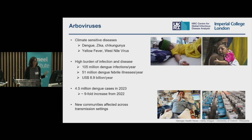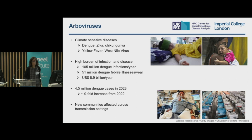In Nepal, where dengue was introduced in 2009, dengue is now spreading into the mountain regions. And in Europe, I'm sure you have heard that over the summer, hundreds of cases have been locally acquired in Italy, France and Spain.